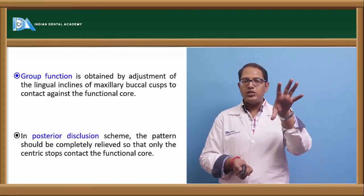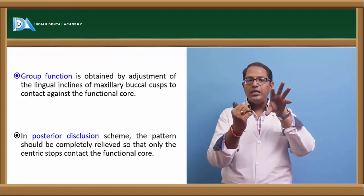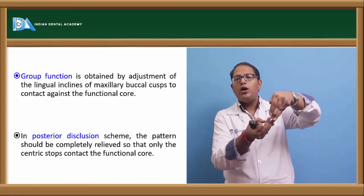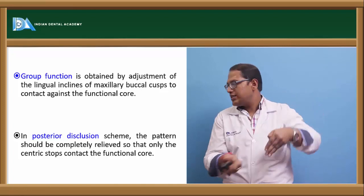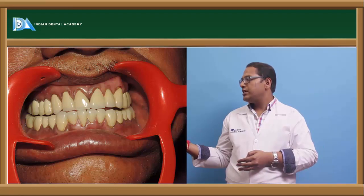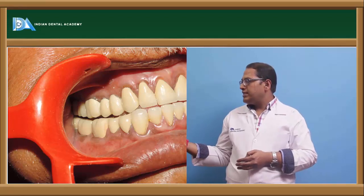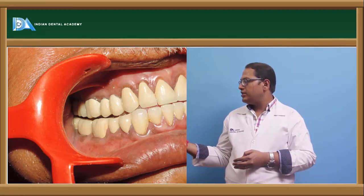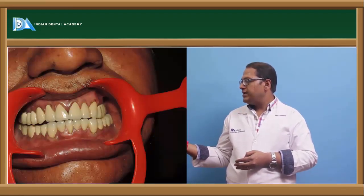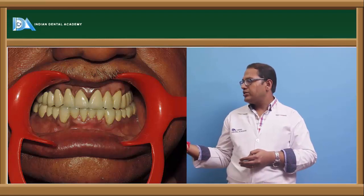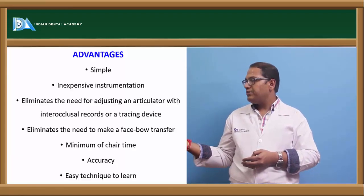Because we have to create disocclusion posteriorly when the patient protrudes forward, the maxillary has to come out of the functional core cast. The final prosthesis has disocclusion in the posterior for group function. In left lateral, you can see canine guidance — when the canines are meeting, no other teeth are in contact. On the other side, when canines are meeting, it is disocclusion on the non-working side. This is a complete picture of rehabilitation using the Pankey-Mann technique.